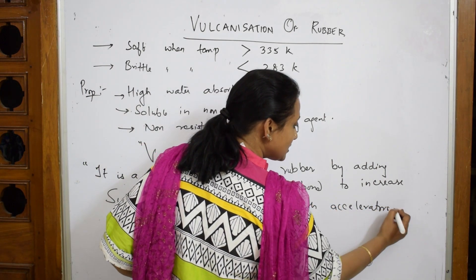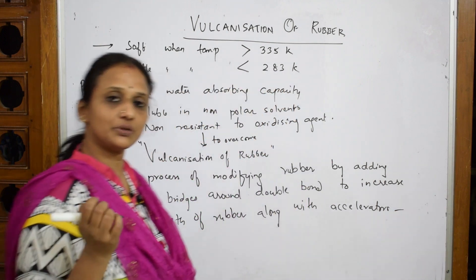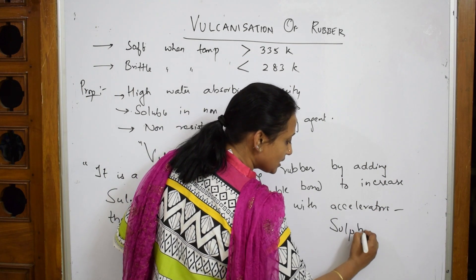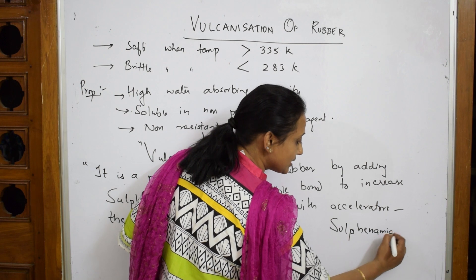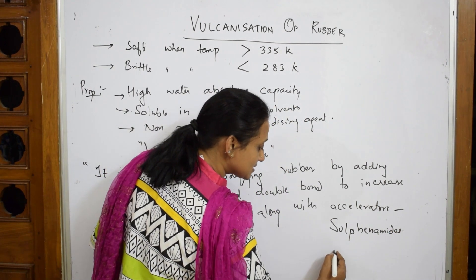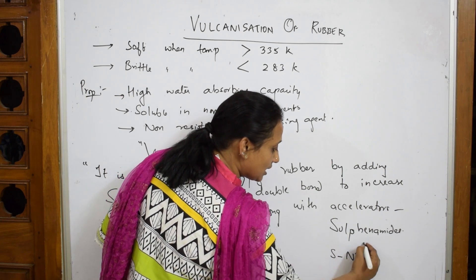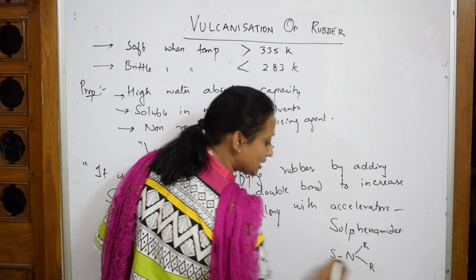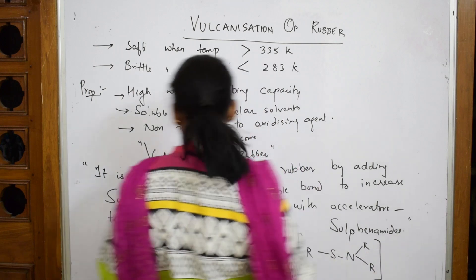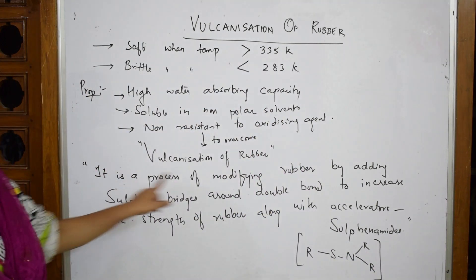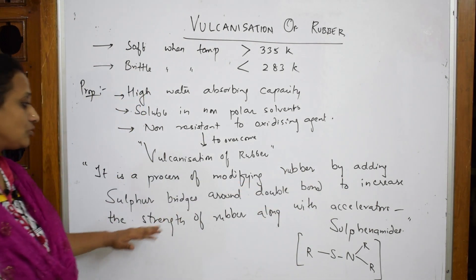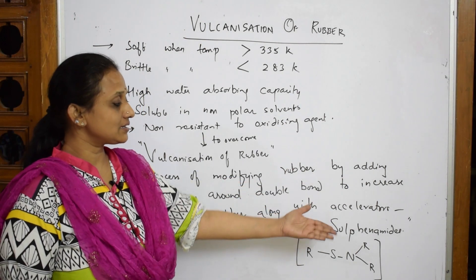One example of an accelerator is sulfenamide. Sulfenamide is an accelerator that also increases the strength of rubber. Its formula contains sulfur bonded to nitrogen, which is bonded to two alkyl groups. So the definition is: vulcanization is a process of modifying rubber by adding sulfur bridges around double bonds to increase strength, along with accelerators like sulfenamide.